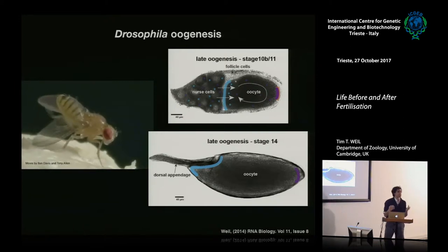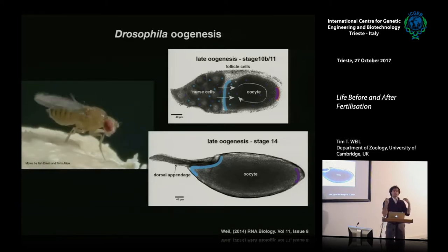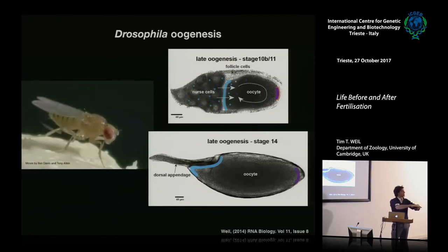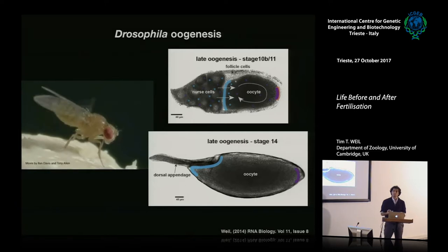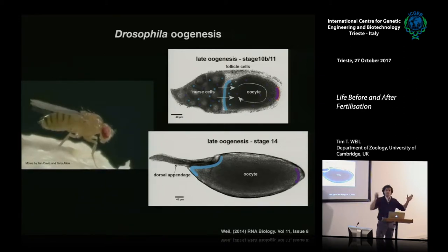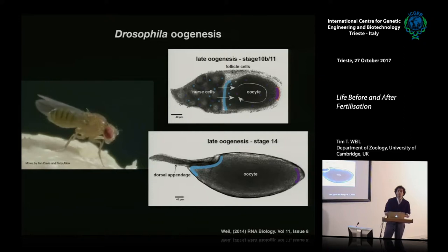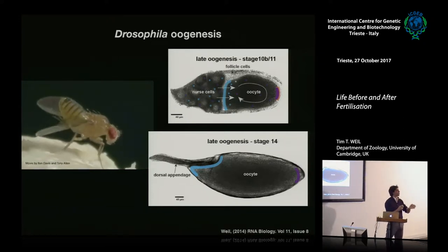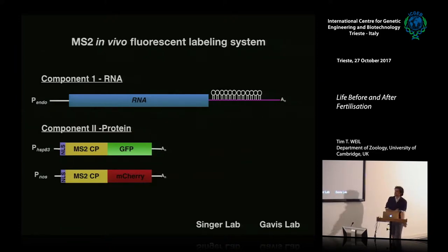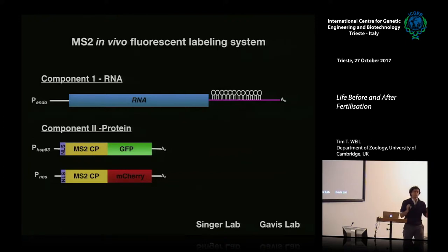A key question is how can you actually follow an RNA in vivo? Historically, people used in situ hybridization, requiring tissue fixation, or injected in vitro synthesized RNA using labeled UTPs — but that requires physical entry into cells and the RNA hasn't been properly packaged. A system developed by Rob Singer's lab in 1998 in yeast, and then pushed by Liz Gavis' lab, offers a way to follow RNA in vivo, live, with endogenous transcripts.